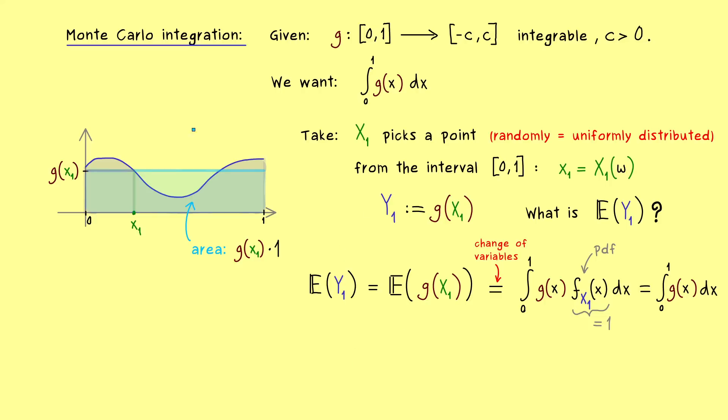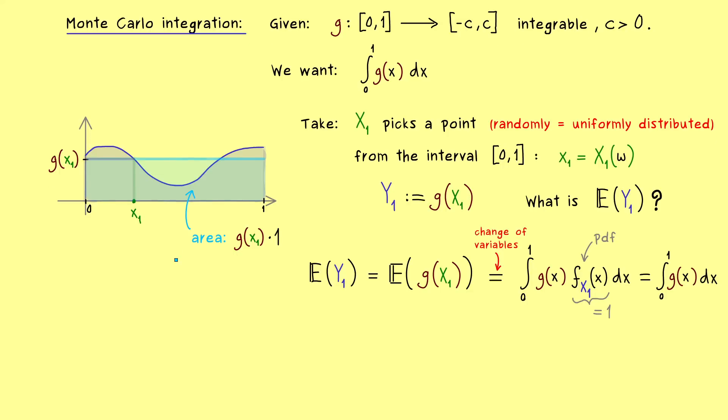So you see, repeating this rough estimate as we have it here again and again will give us a good estimation of our expectation in the end, if we form the average of course.